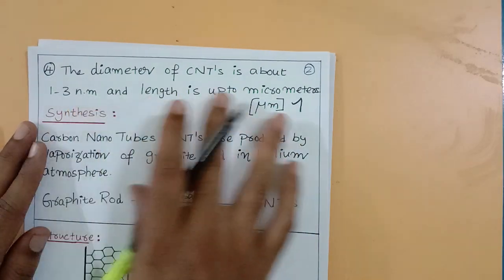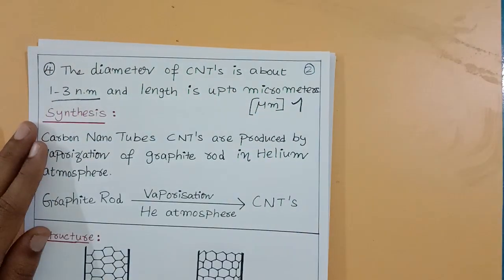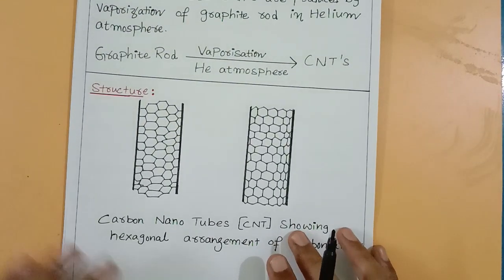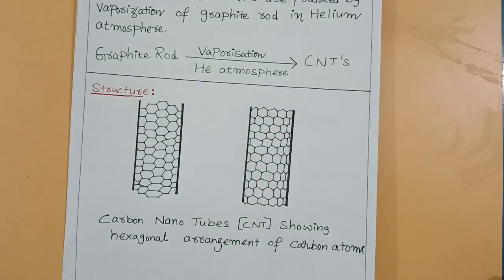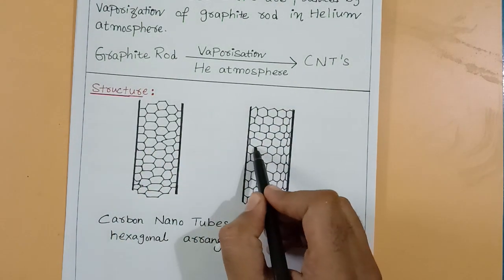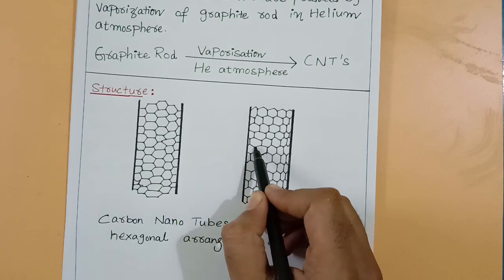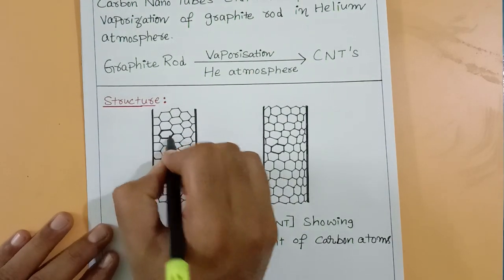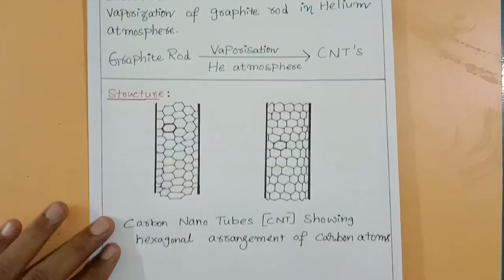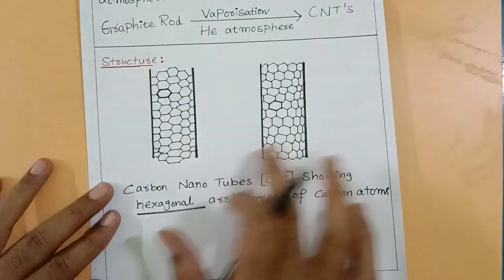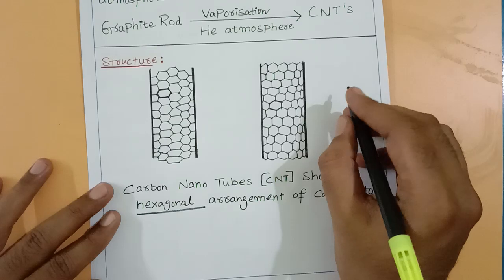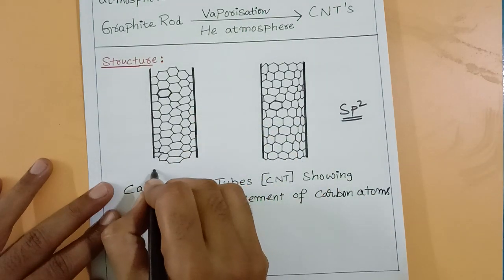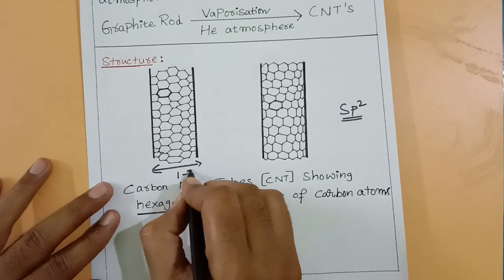At the carbon nanotubes level, the diameter thickness is 1 to 3 nanometers and the length is a few micrometers. You can see the structure here — this is a carbon nanotube showing the hexagonal ring arrangement. Carbon atoms are arranged in the form of hexagons, and each carbon atom is sp2 hybridized.